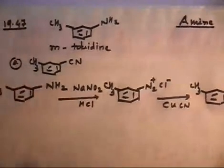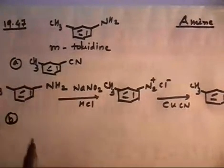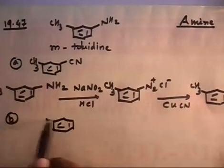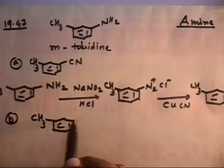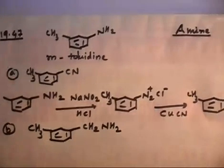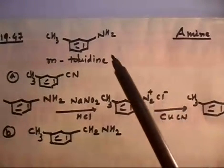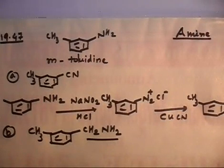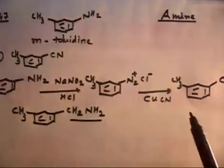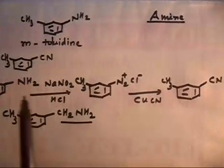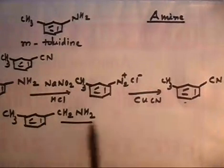Now Part B. So Part B says: how will you convert this compound? So you have CH2NH2. Here you have CH3 and here you have CH2NH2. So how will you convert metatolidine — this molecule — to this molecule? Now you see I have CH2NH2, so I can do reduction of CN. That is the important point. You see, in Part A we have already prepared this compound. Now if I go from here to here and then do reduction, I will get this compound.